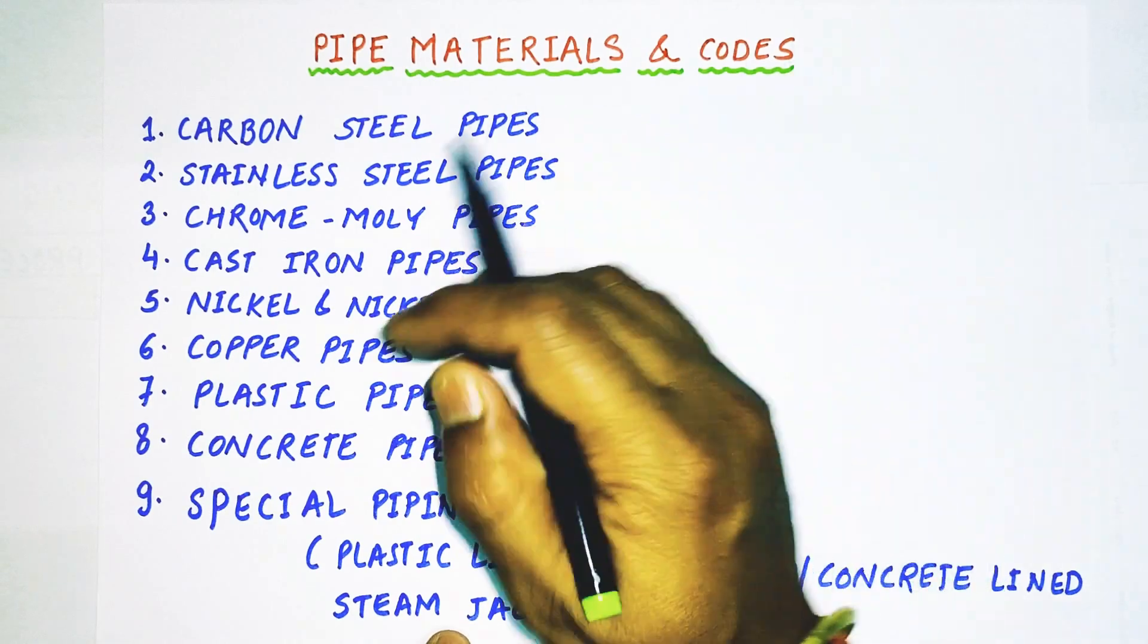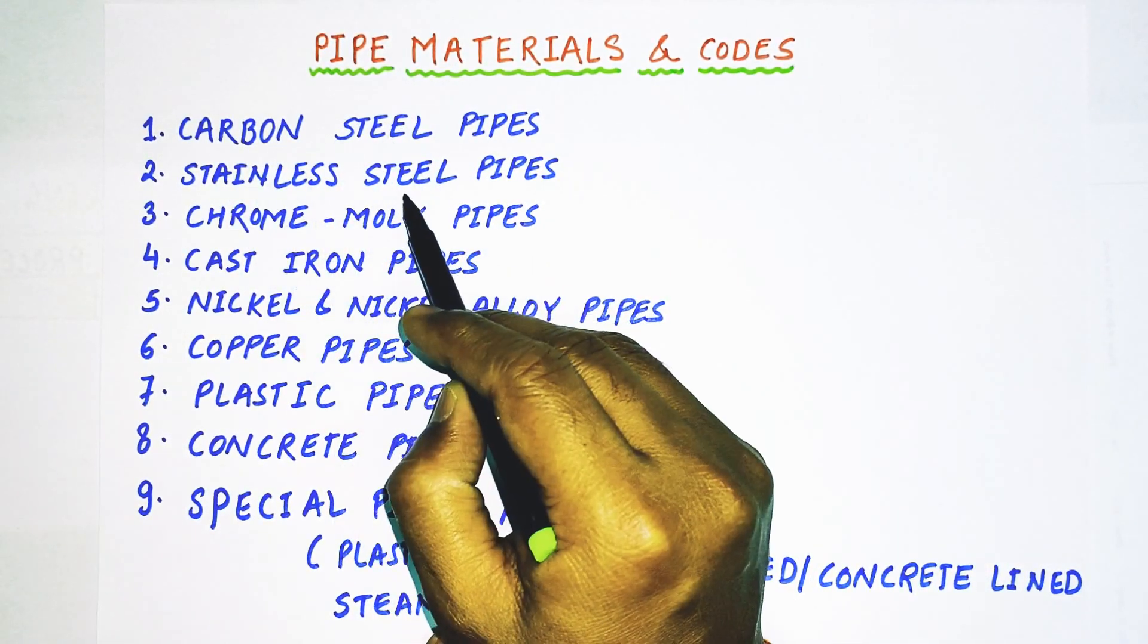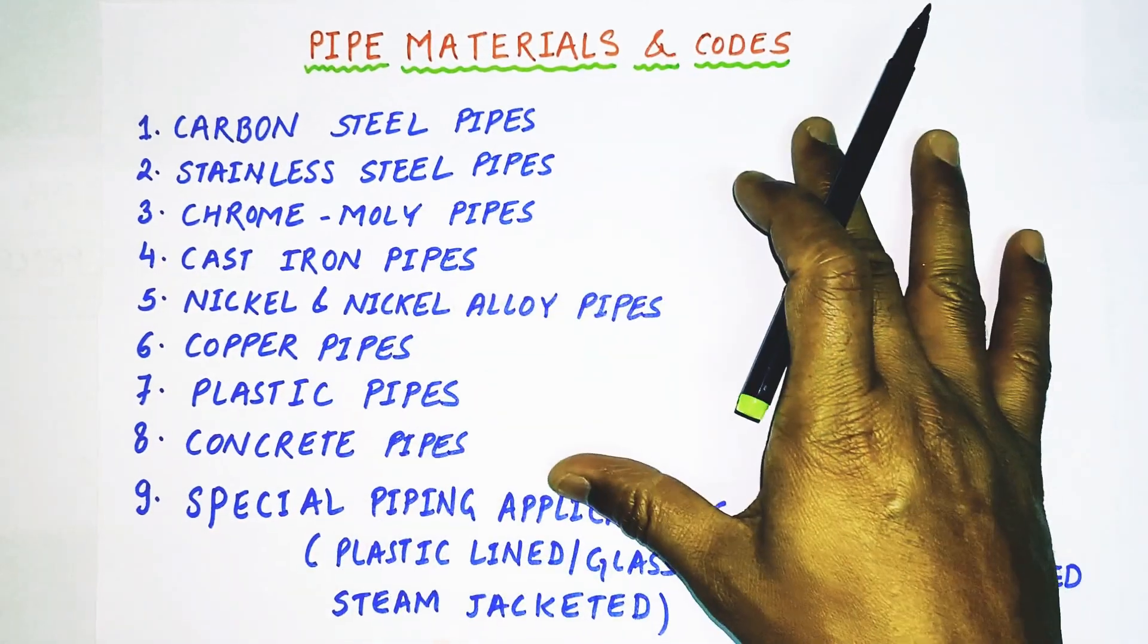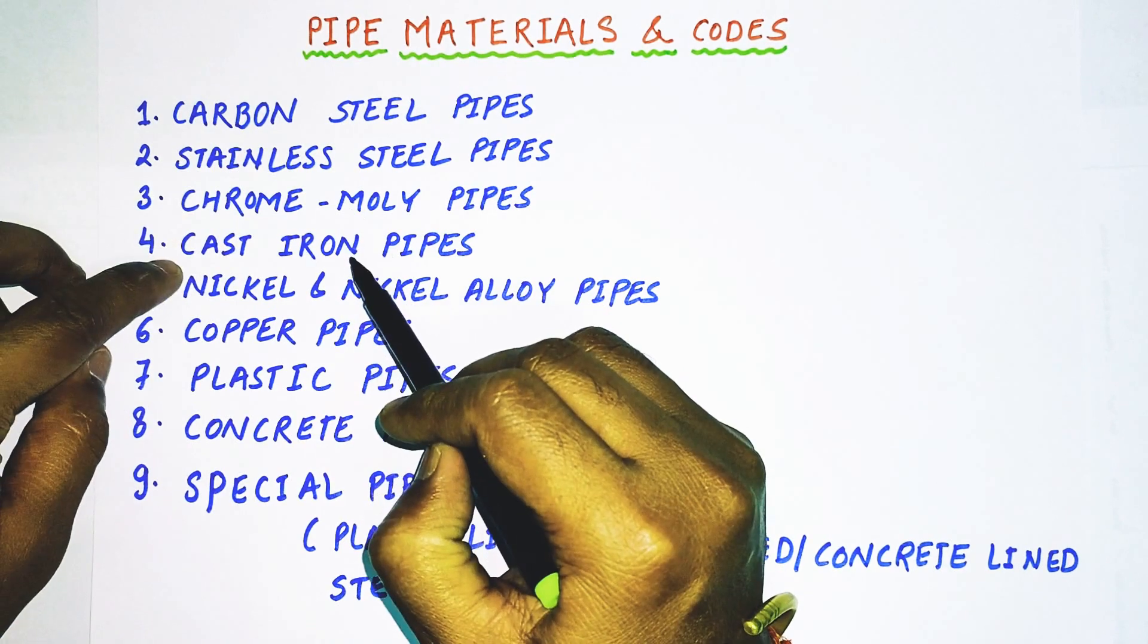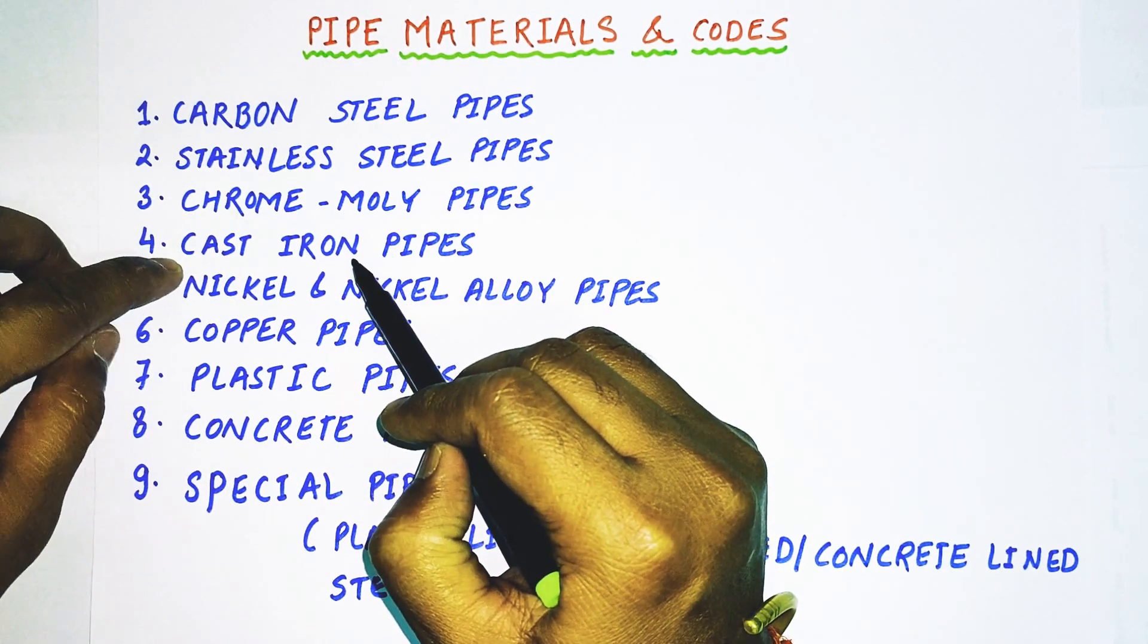The different materials being used for manufacturing of pipes are carbon steel, stainless steel, chrome moly, cast iron. These four belong to ferrous metal because iron is the principal component. Then we have nickel and nickel alloy pipe, copper pipes, plastic pipes, concrete pipes, and special application pipes like plastic lined, glass lined, concrete lined, and steam jacketed.